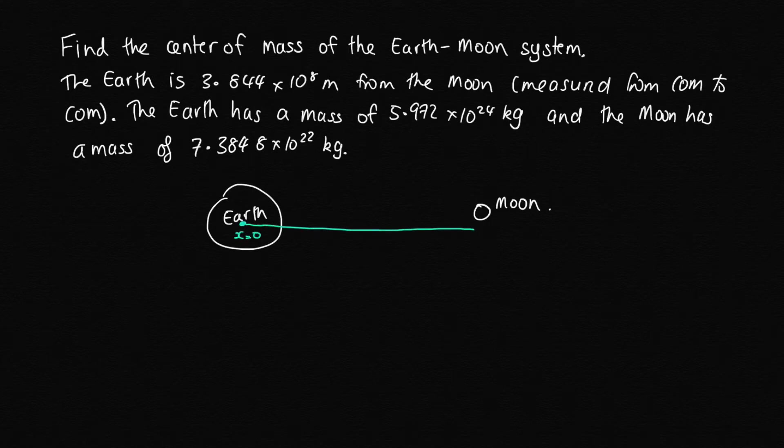Then we've got this distance here, and we're told that this is equal to 3.844 times 10^8 meters. So that distance is x_m, and we'll call x of the Earth equal to zero.